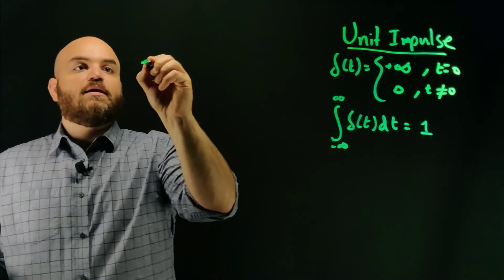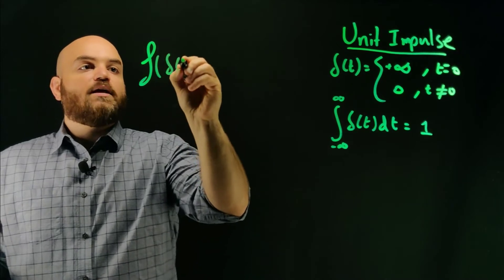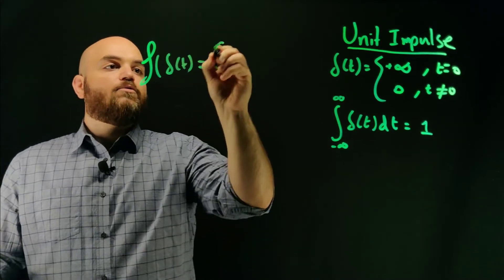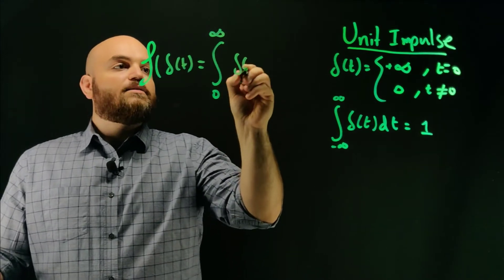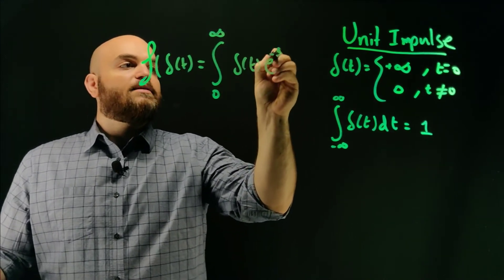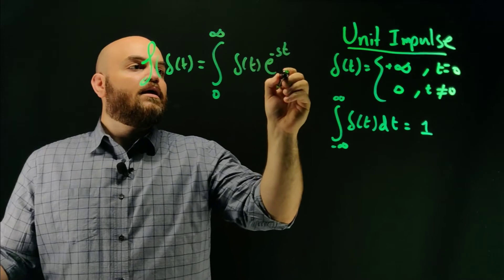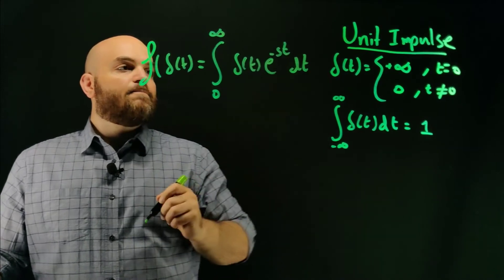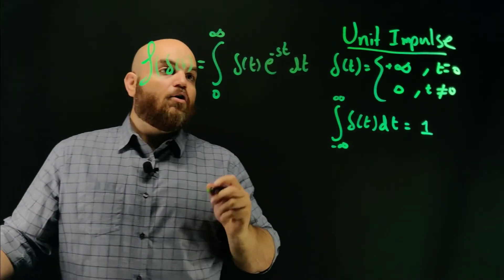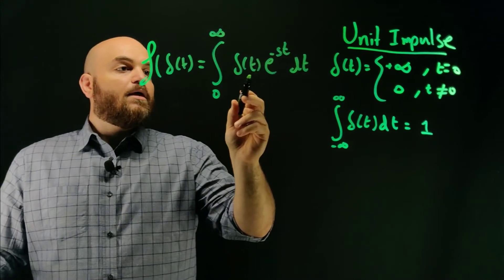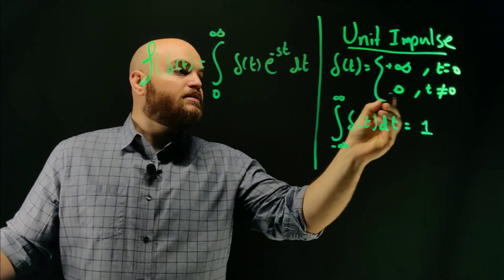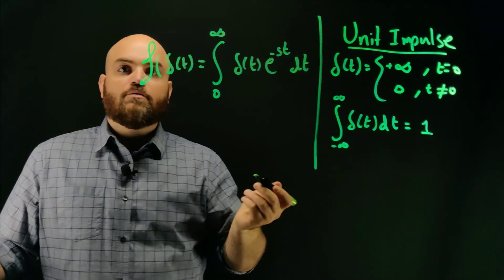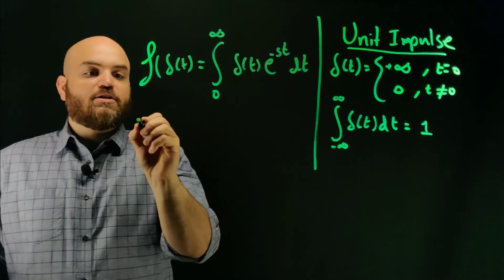And so if we look at the Laplace of delta, that's going to be equal to the integral of zero to infinity of delta e to the minus st dt. So we know this function here, delta, is zero everywhere else but zero. So really, the bounds here can be changed.